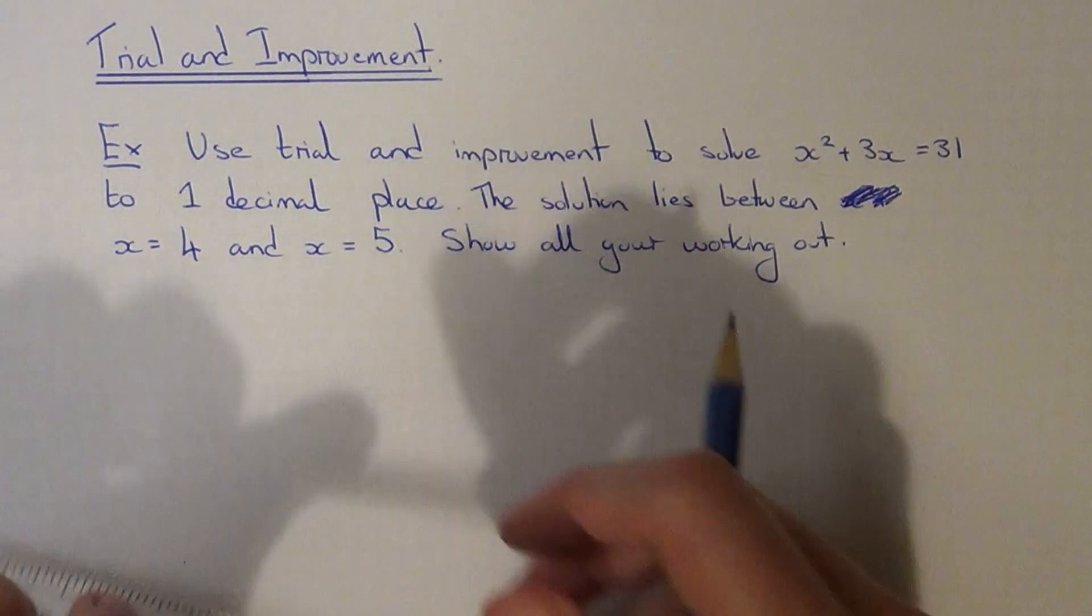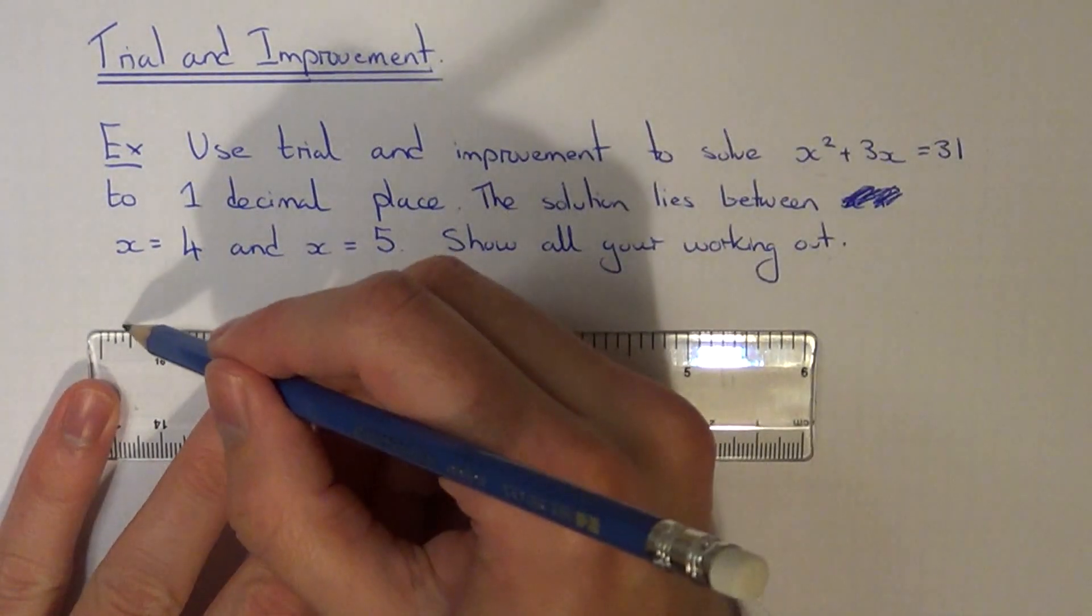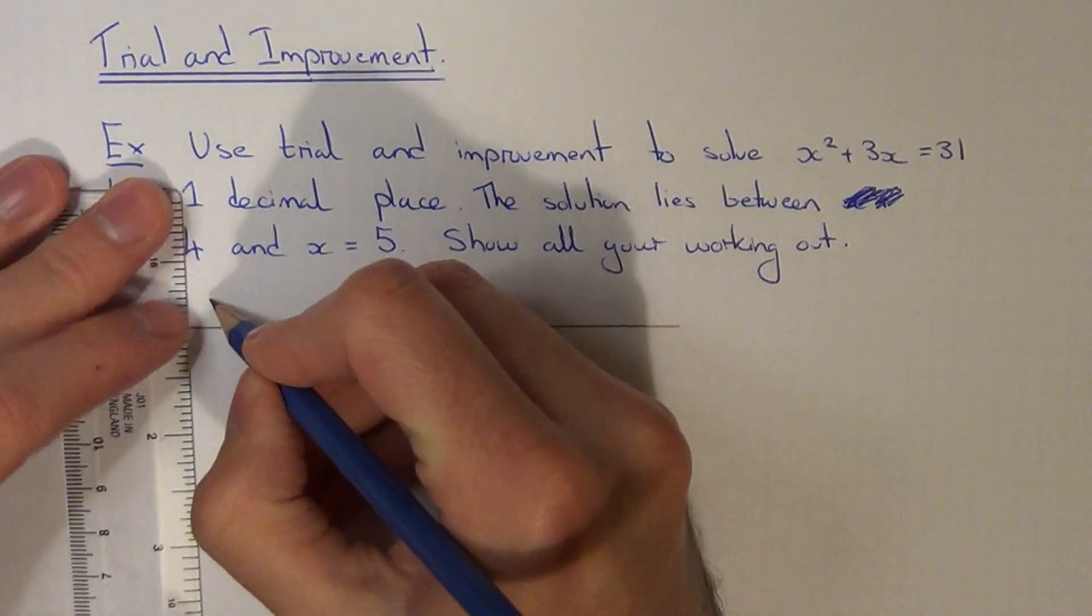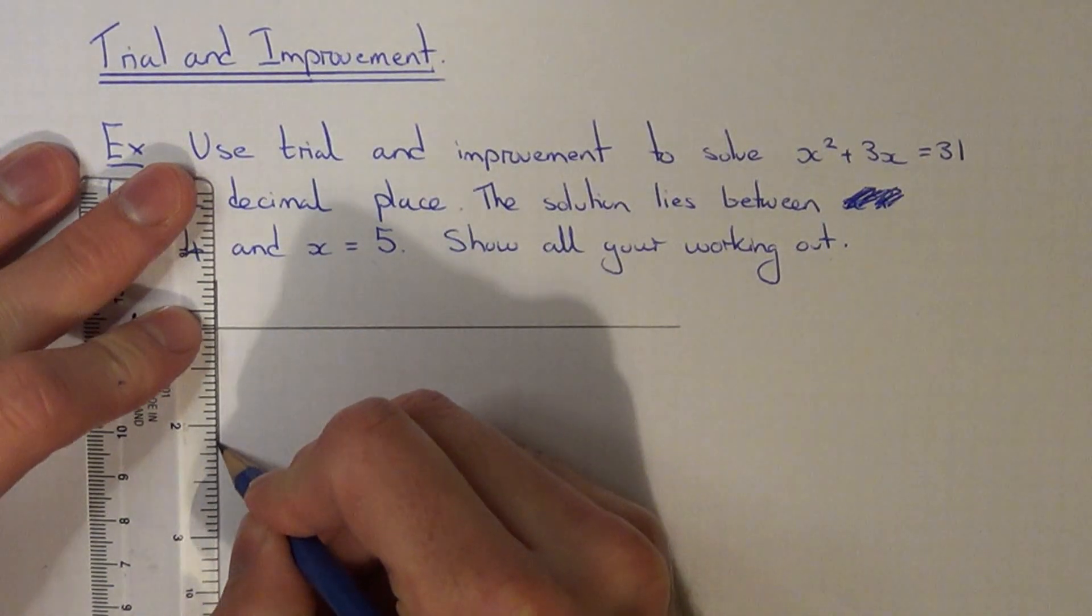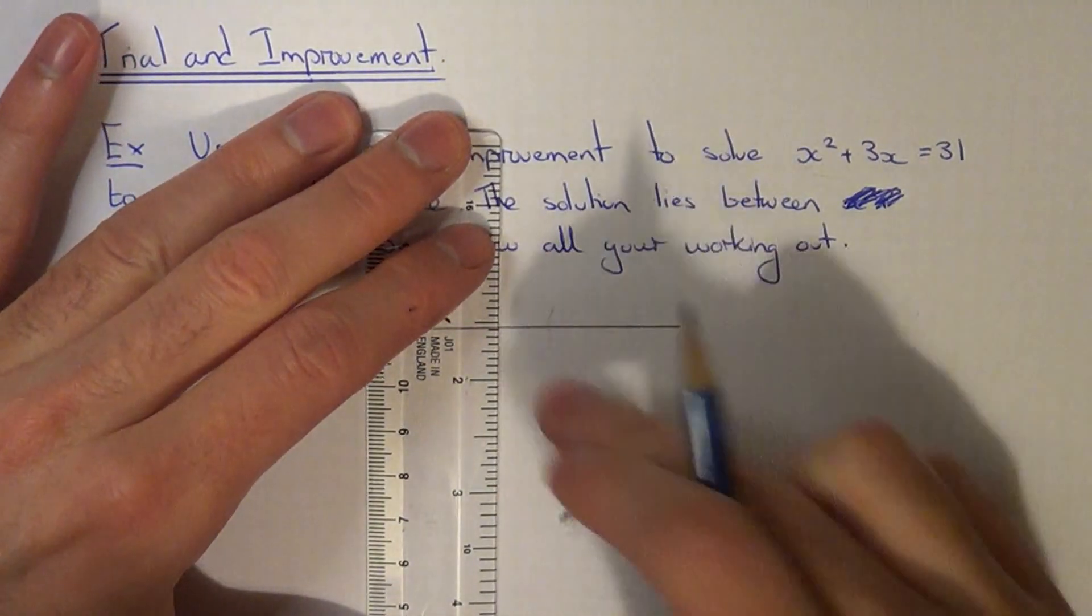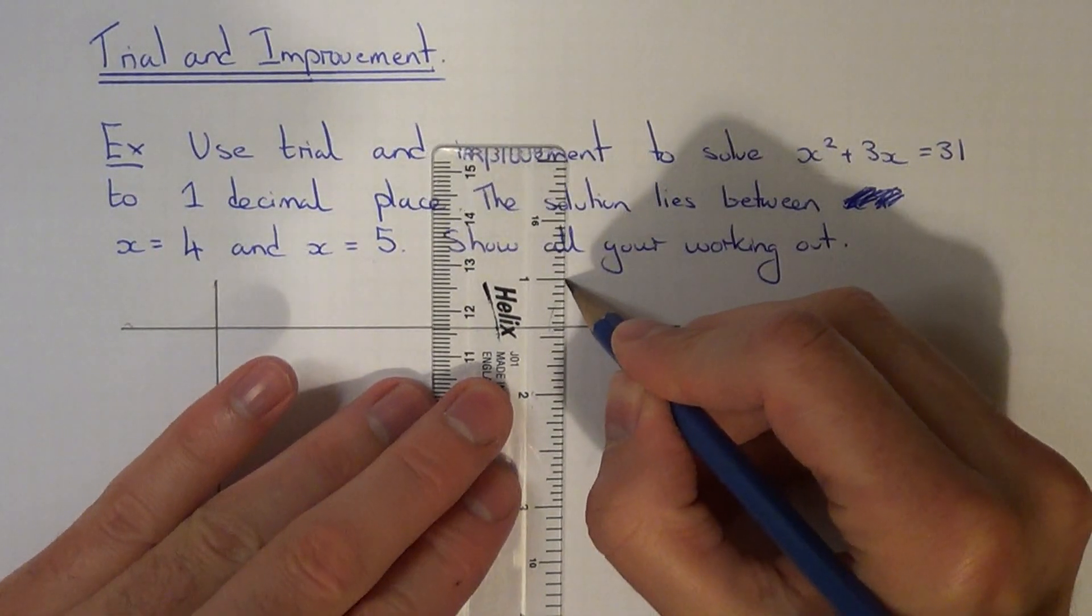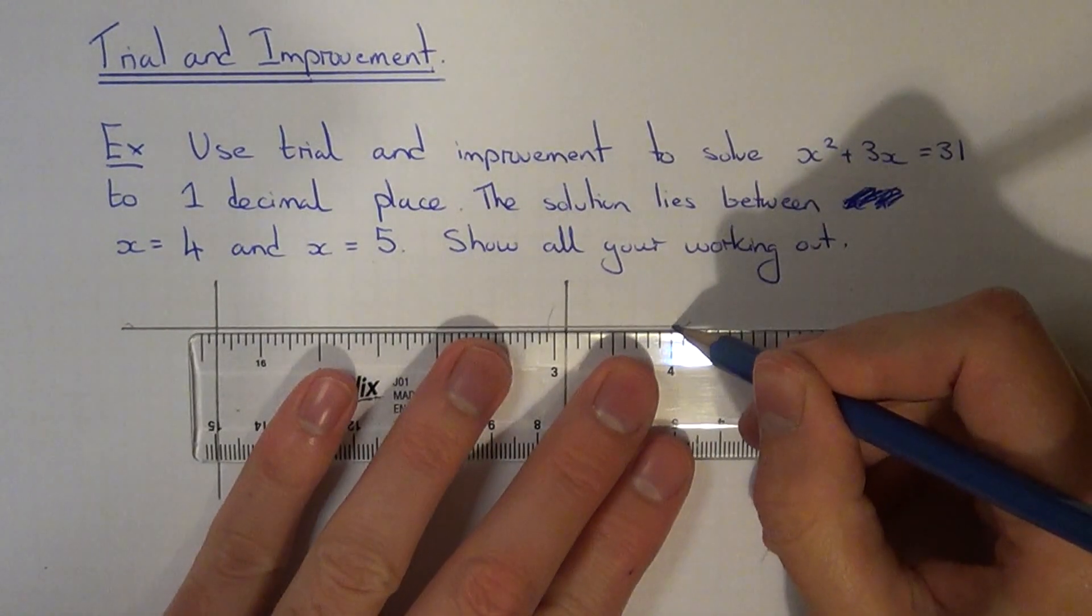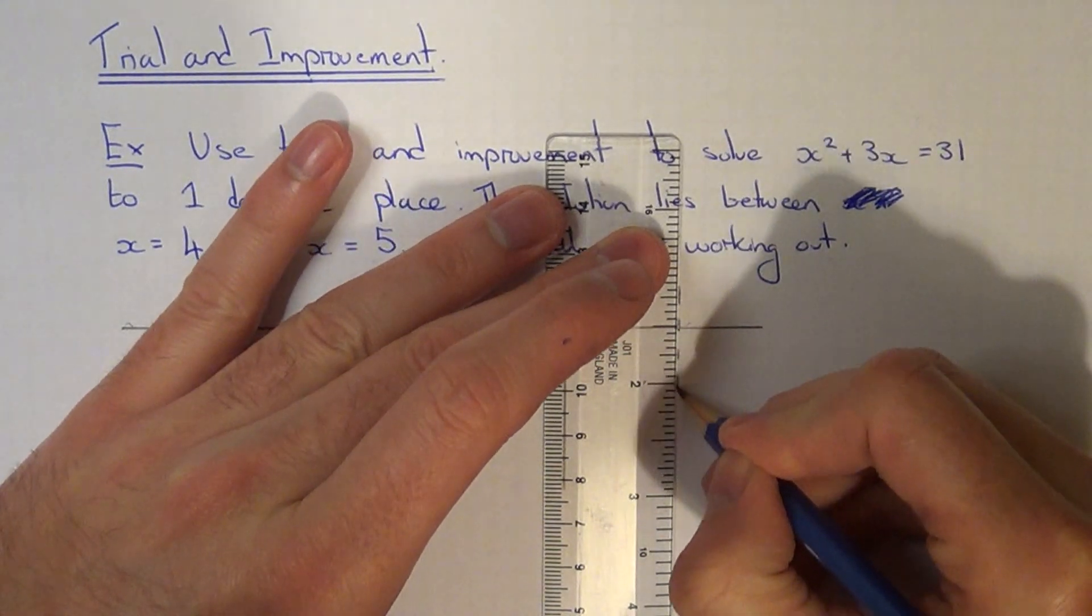So the best thing to do first of all is draw yourself a little table. Divide your table up into three columns. Make the second column the largest because this is where all your working out will go.